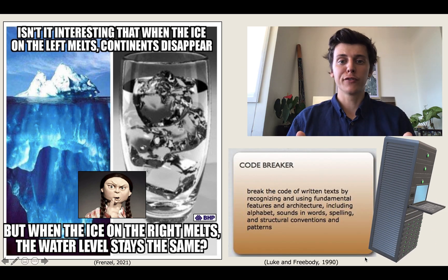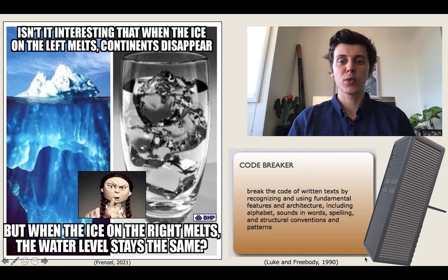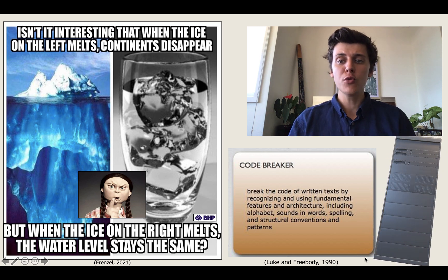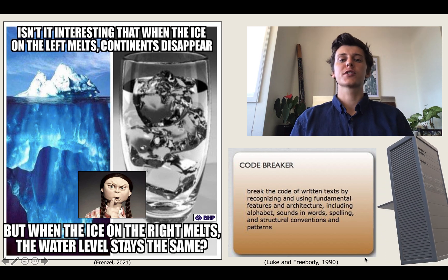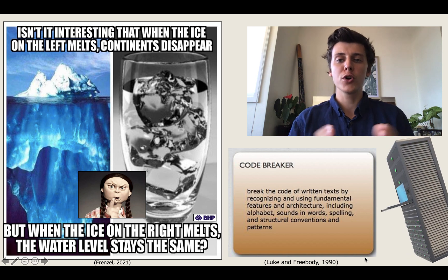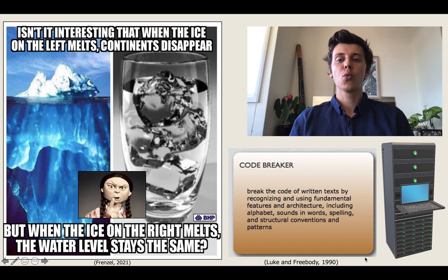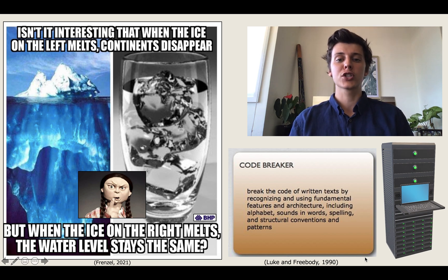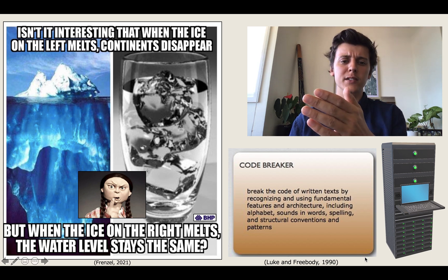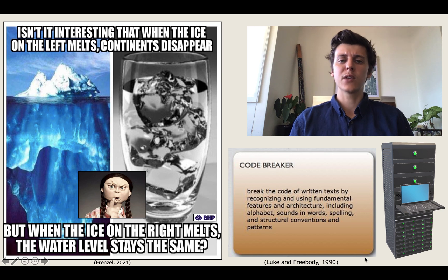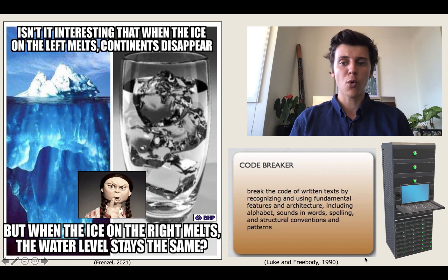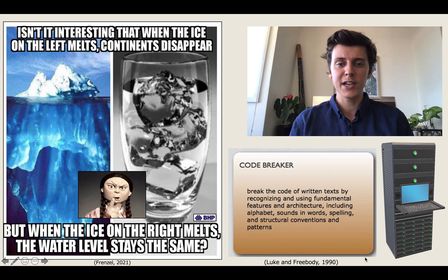The first domain of the four resources model to use when dissecting most texts is the codebreaker element. This is used to decipher the exact structure of the words and symbols used in the text and their relationship to one another. One strategy that can be used in this domain is to have students engage in an exclusive brainstorm. Students will ask themselves: why all capital letters? What is BHB and why is it depicted so small? Who is the cartoon girl and why is it such an unflattering representation of her?